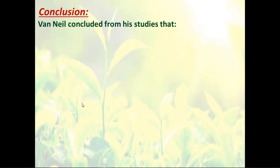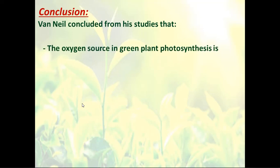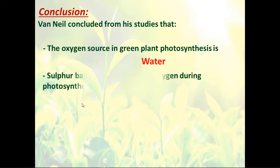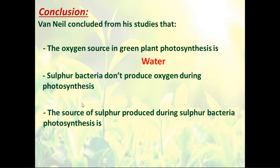So from this, we can conclude that the oxygen source in green plants during photosynthesis is water. Because when we replaced water with hydrogen sulfide, we didn't get oxygen — we got sulfur instead. Sulfur bacteria don't produce oxygen during photosynthesis, but they produce sulfur instead, because they use hydrogen sulfide instead of water.